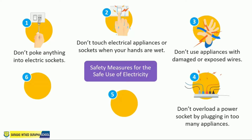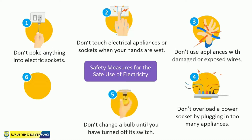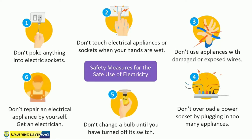Three: don't use appliances with damaged or exposed wires. Four: don't overload a power socket by plugging too many appliances into it — this draws a large current which may burn the wire and cause fires. Five: don't change a bulb until you have turned off its switch. Six: don't try to repair an electrical appliance yourself — get an electrician to do it.